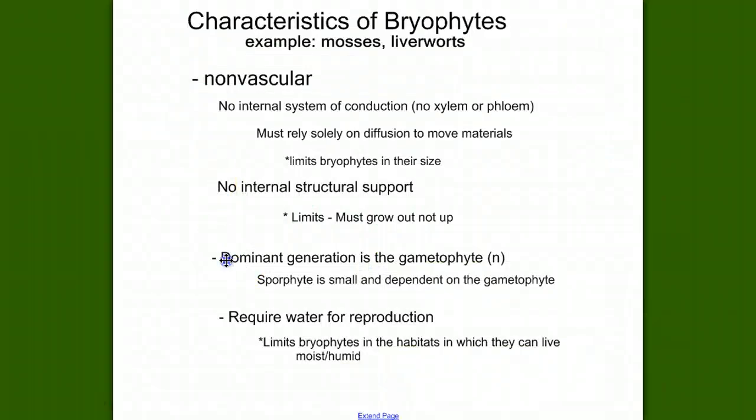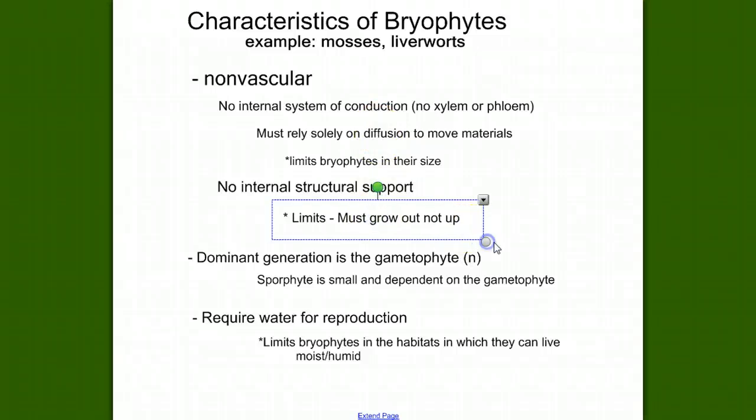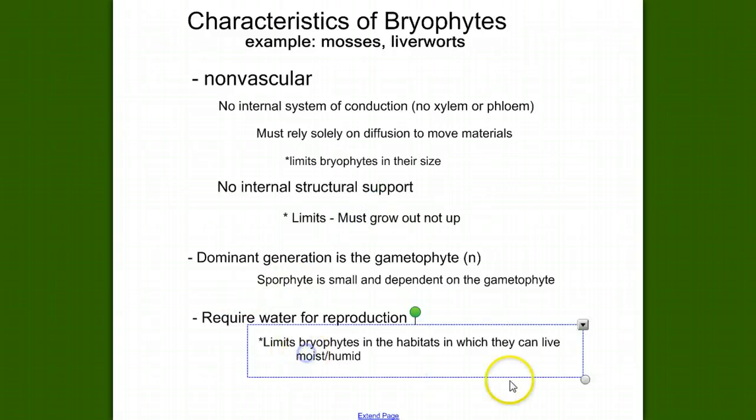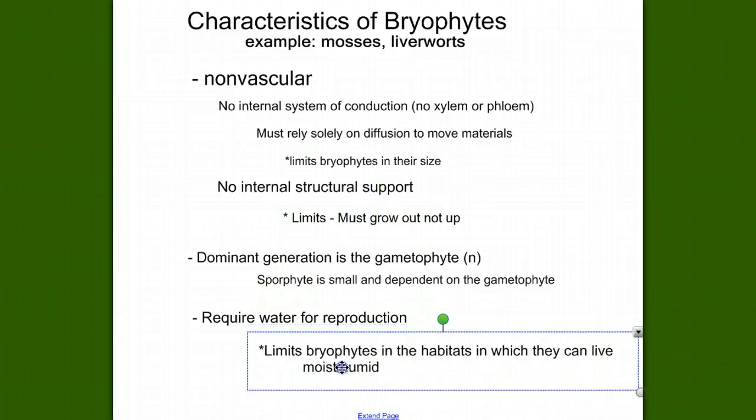So as we look at these characteristics, non-vascular, dominant generation is gametophyte and require water for reproduction, we can see some ways in which bryophytes are limited. They're limited in their size. They can't be big because they need to rely on diffusion. They're limited in their direction of growth. Without structural support, they grow out and not up. And they're limited in their habitat because they require water for reproduction.